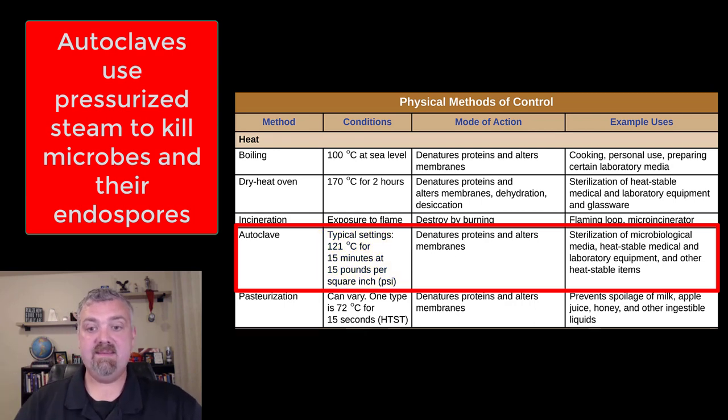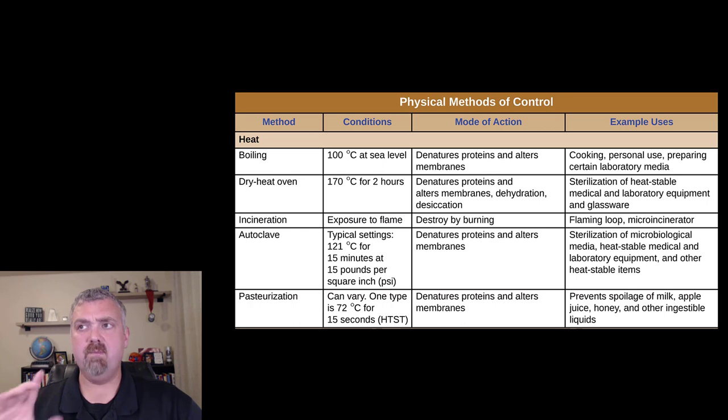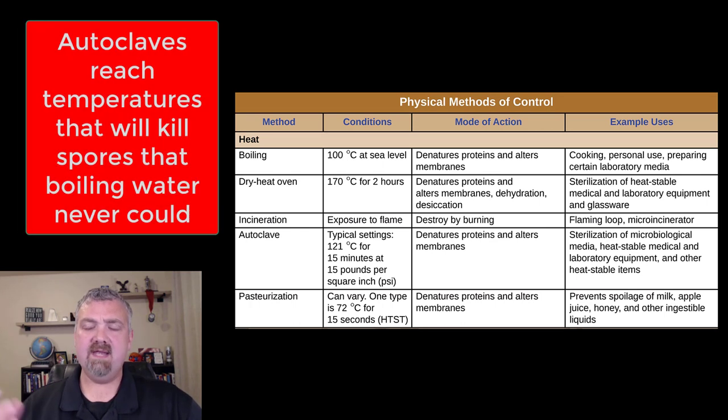Autoclaves work by the steam, like other forms of moist heat, denaturing proteins and altering membranes. But the key here is that autoclaves are used to sterilize in ways boiling water never would be able to because the temperature is high enough to do so. The other key with autoclaves is they're designed or used when you need to kill spores. Spores and endospores will be killed in autoclaves in ways they won't be killed with other methods.